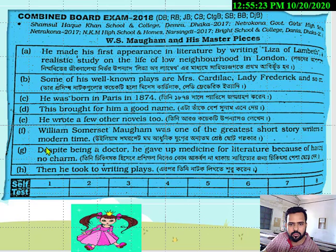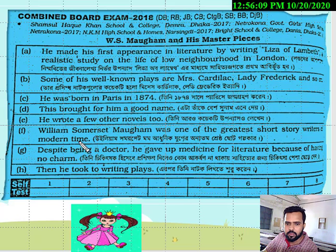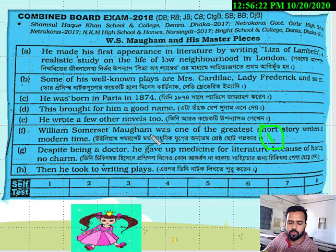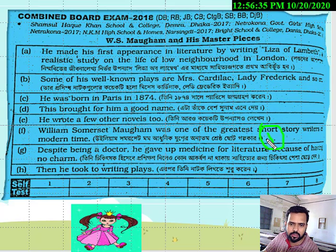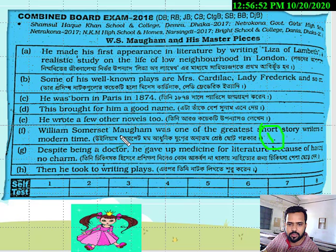Try to guess which one is going to be the first line. I think you have already guessed it. The first line is definitely F. F is the first one in this rearranging because in this line we have an introduction. If you want to rearrange an exercise in your question paper, at first you have to choose the line where we get a short introduction of a person, a writer, or a great personality. Here the first one — William Somerset Maugham was one of the greatest short story writers of modern time. It is a short introduction of this great writer, so F is our first choice.